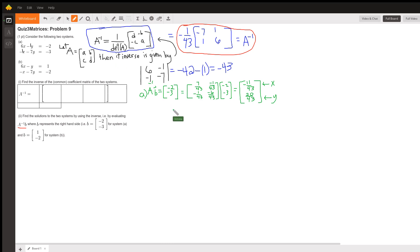We can check it. We can go 6 times negative 11 over 43 minus y, which is minus 20 over 43. And that equals negative 66 plus 20 over 43, which gives us negative 86 over 43, which equals negative 2. So it at least works for the first, the top equation in part A.